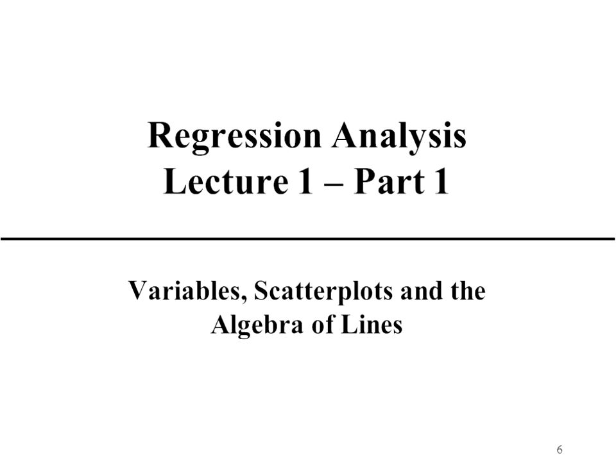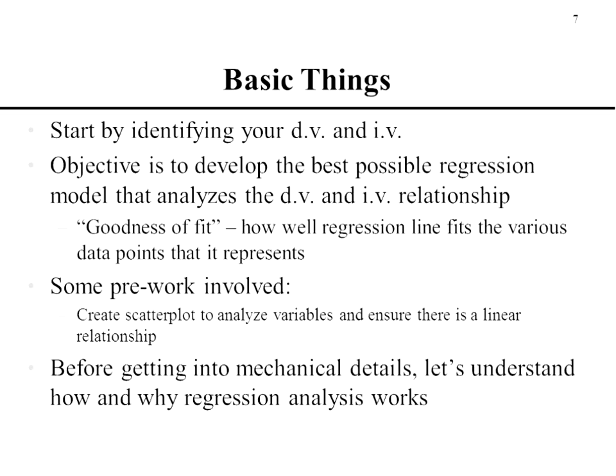Now we're going to move into Part One after we finish the introduction. We're going to study variables, scatter plots, and the algebra of lines. We always start by identifying a dependent variable that we want to analyze — our main thing — and the independent variable that we want to see how it influences our dependent variable. We also need to recognize that one of the objectives of regression is to develop a model that really best characterizes the relationship with little error.